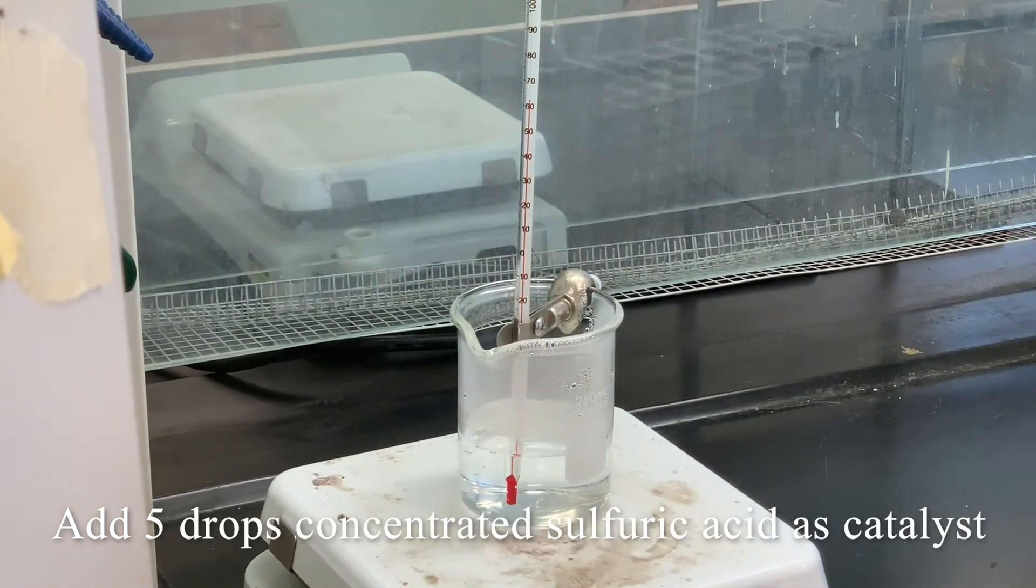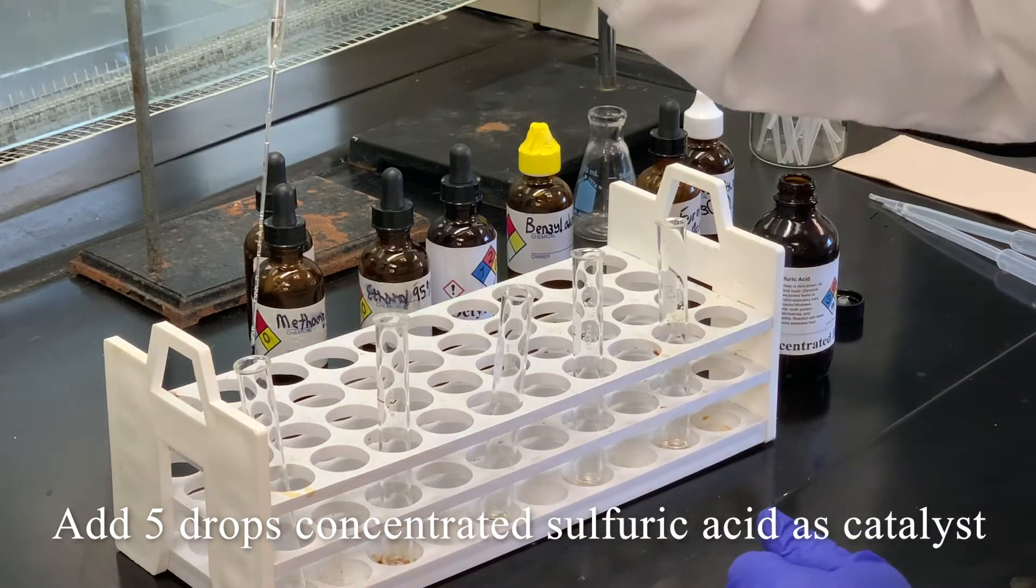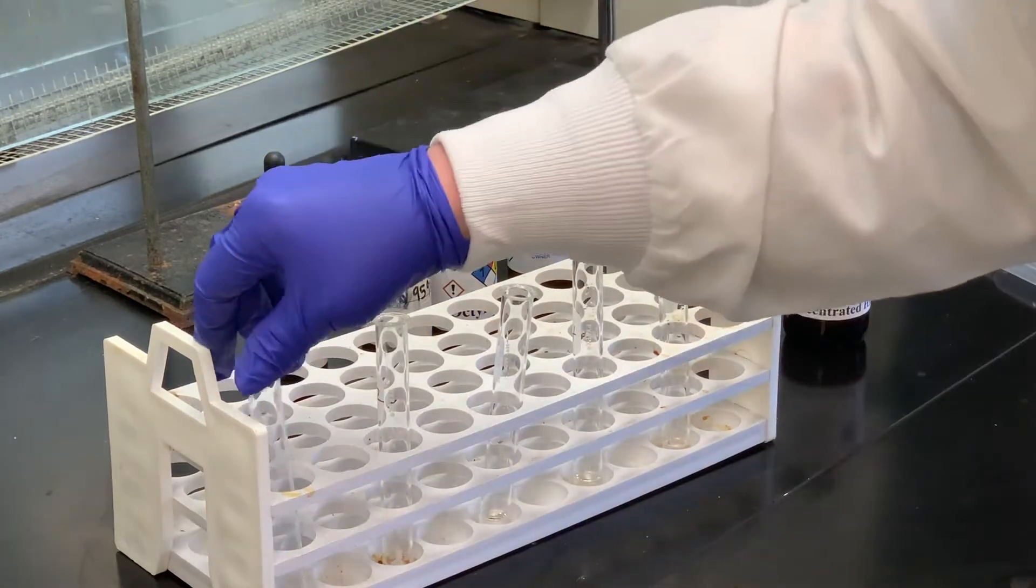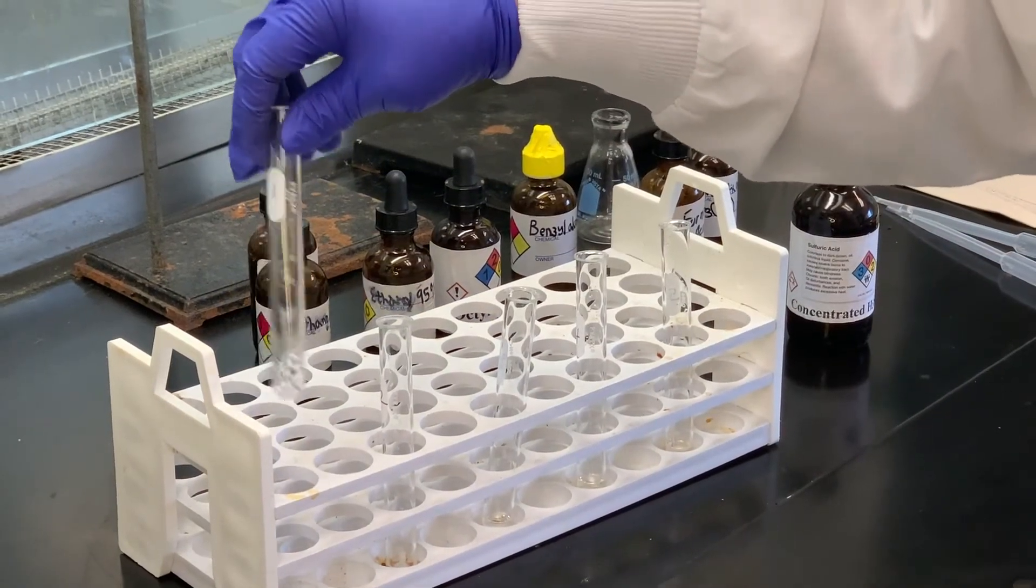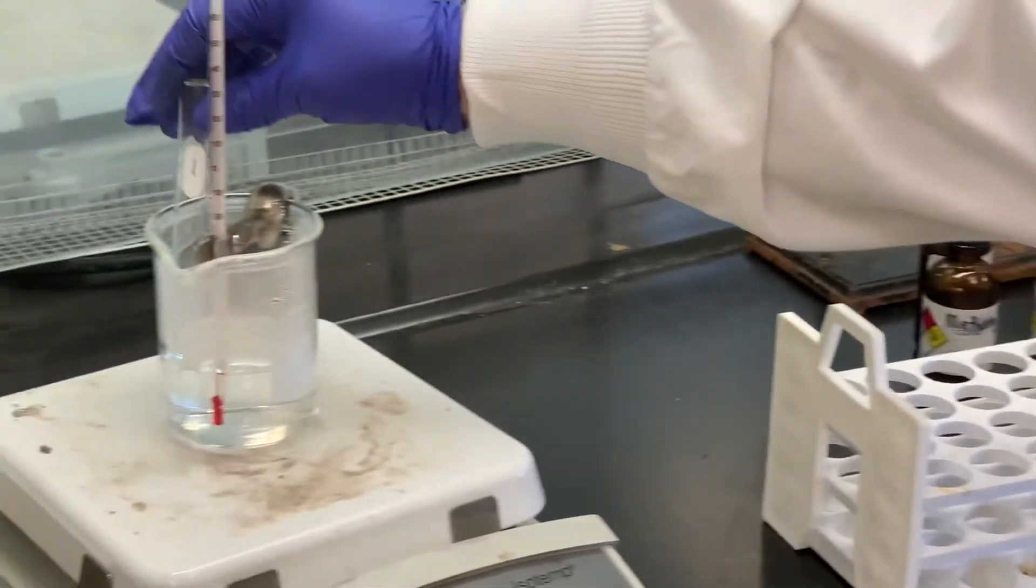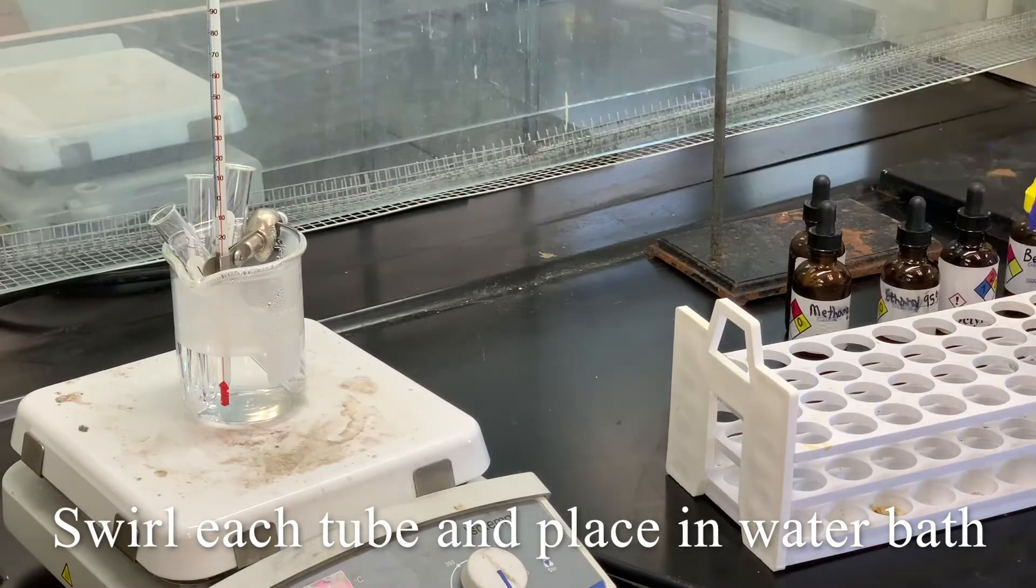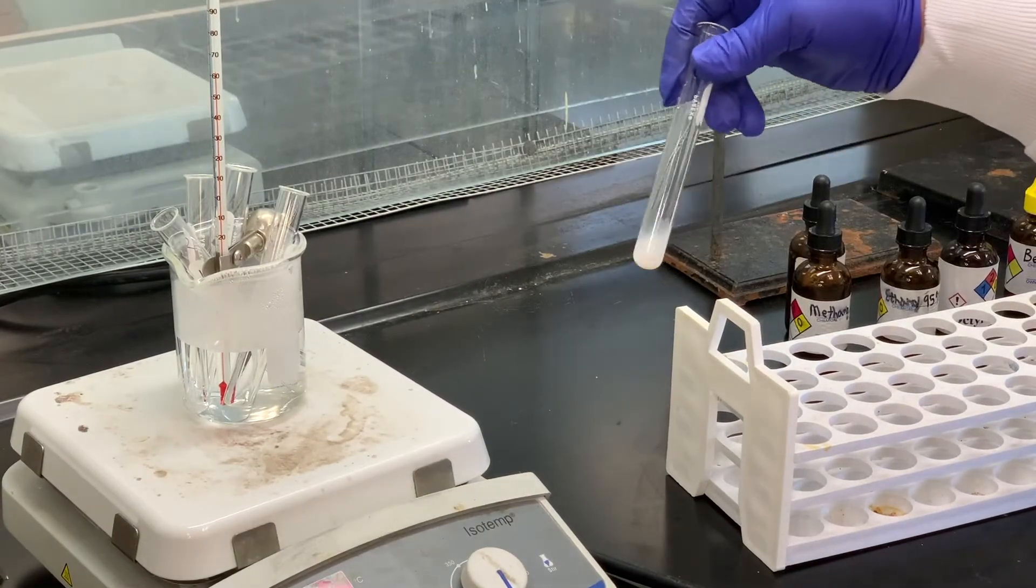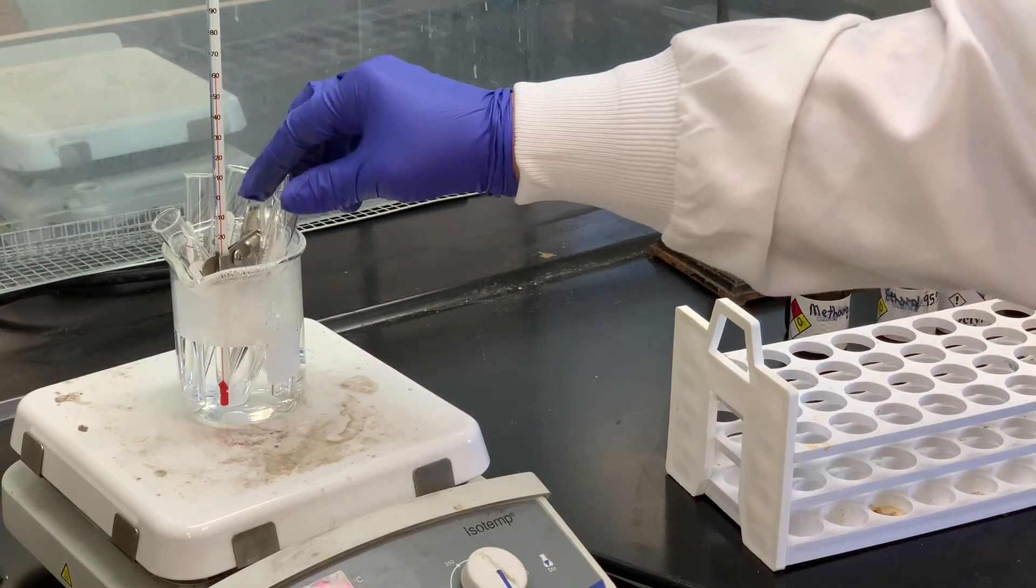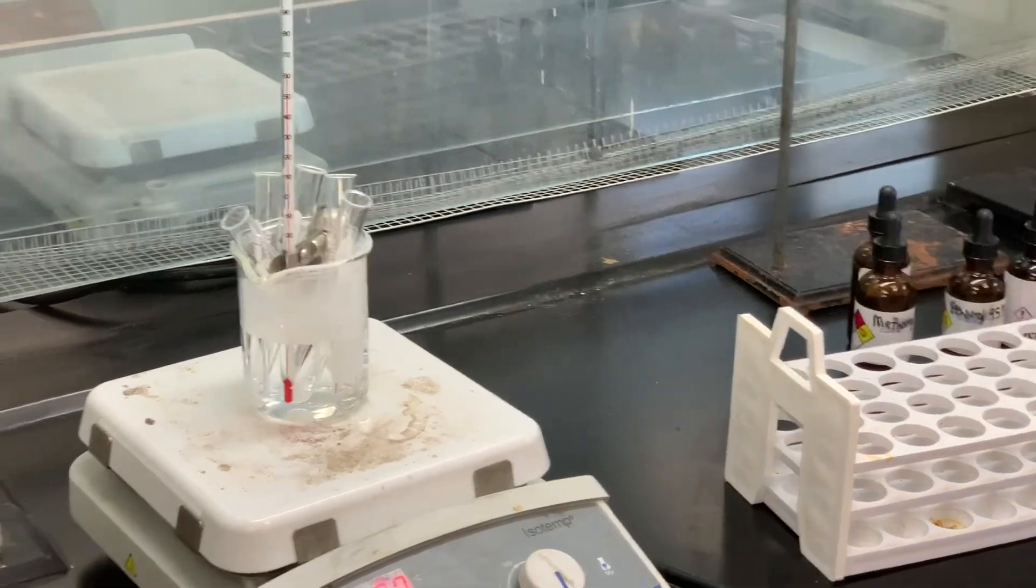This is concentrated sulfuric acid, so you always have to be careful. Make sure you wear gloves. If you think you get anything on you, you should change your gloves immediately. Now we certainly want to swirl that. And then we'll place these into the hot water bath. It's not uncommon for precipitation to occur when they're heated. That typically will go back into solution. So we'll keep a check on that. We'll heat this for about 10 minutes and then we'll come back and continue.